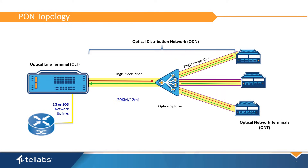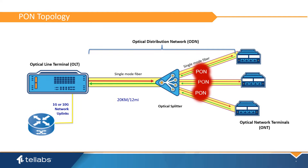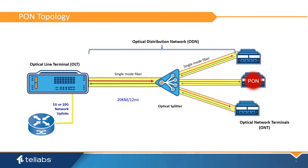Traffic is passed between the OLT and ONT using a PON encapsulation method. Ethernet packets that arrive at the OLT are sent to the destination by packaging them as PON packets. The packet is then sent downstream on the designated PON interface and broadcast to the ONTs. ONTs that are not the destination for the packet will discard it. The destination ONT will convert the packet to Ethernet and send it to the appropriate port. All downstream traffic is sent using a specified wavelength designated for downstream traffic.